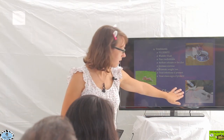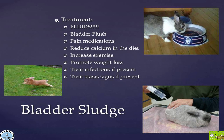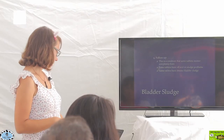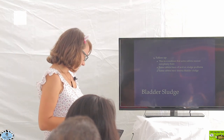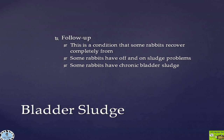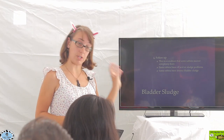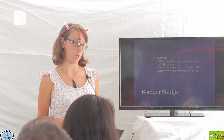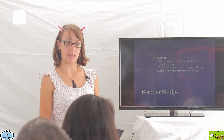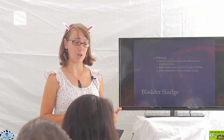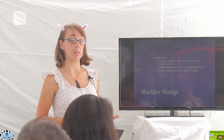Follow-up for bladder sludge is variable. Some rabbits are cured — typically those where the cause was a urinary tract infection or clearly excessive dietary calcium. However, many cases are managed rather than cured. Bladder sludge is reduced but never fully eliminated, and some rabbits require long-term fluid therapy and strict dietary calcium restriction.